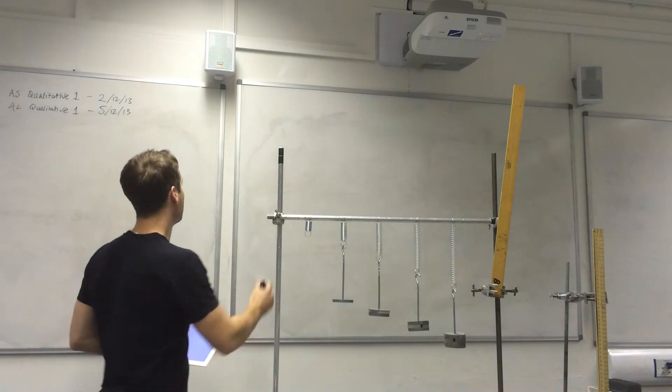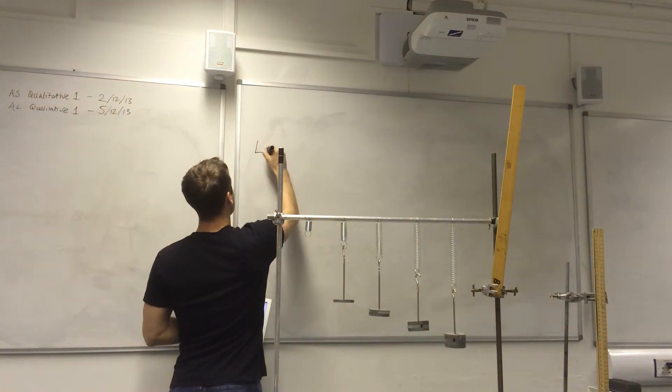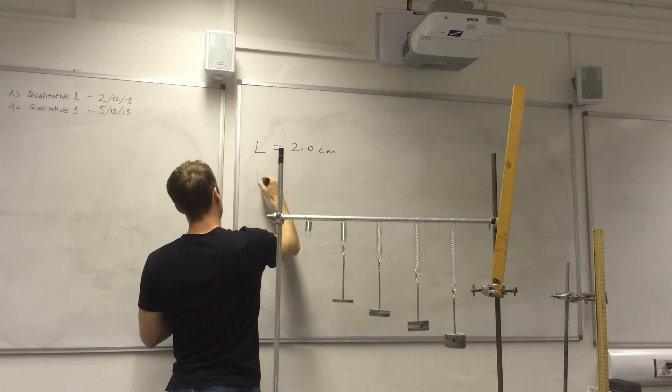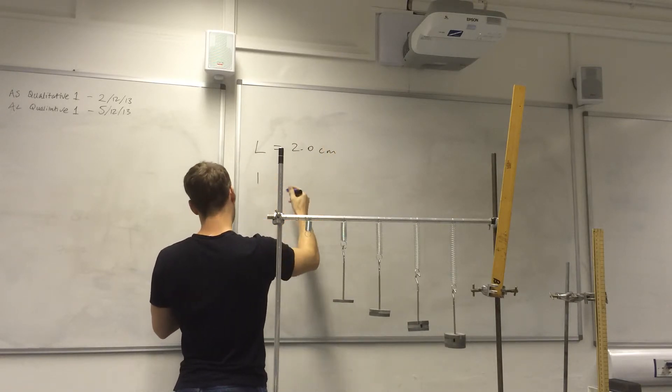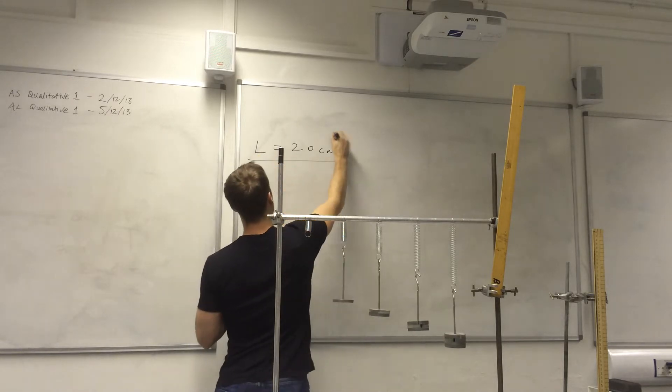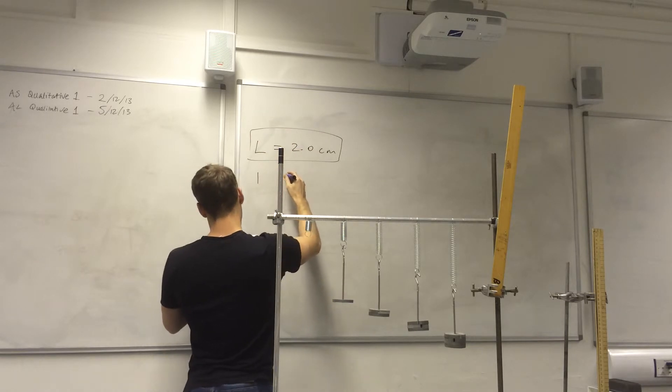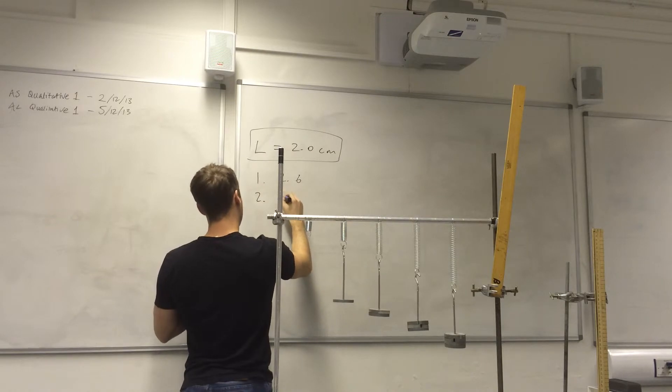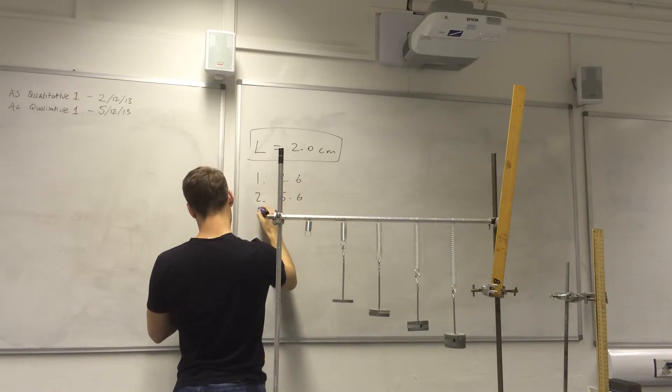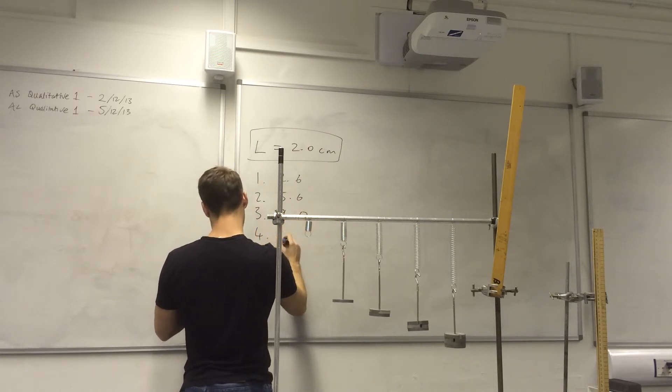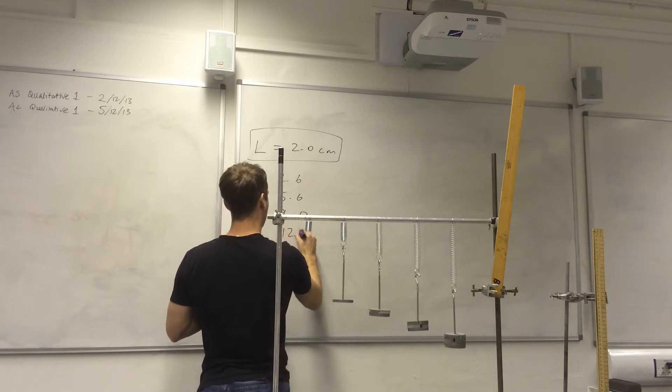So the original is 2 centimeters. And then when we got a load of 1, the extension in this case was 2.6. The second one was 5.6. The third one was 9 and the fourth one was 12.5.